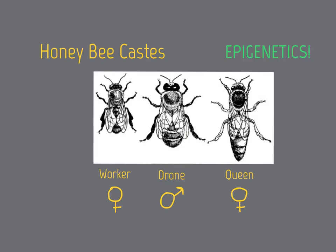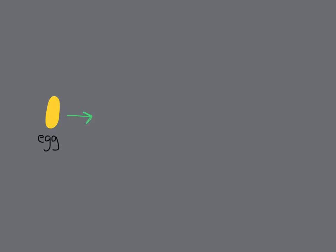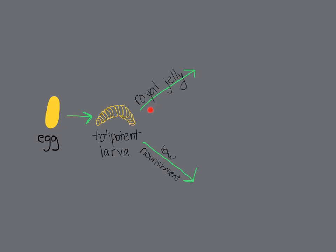A difference in diet at the larval stage of development results in epigenetic changes that lead to vastly different phenotypes. The first stage of development is a totipotent fertilized egg, which at this point can grow up into a worker bee or a queen bee. The egg will then enter its larval form, and at this stage the larva is still totipotent. What will determine the outcome from here on out is the diet that the larva is fed. If a larva is fed a special substance called royal jelly, it will develop into a queen. However, if it is fed a diet of lower nourishment, the larva will become a worker bee.